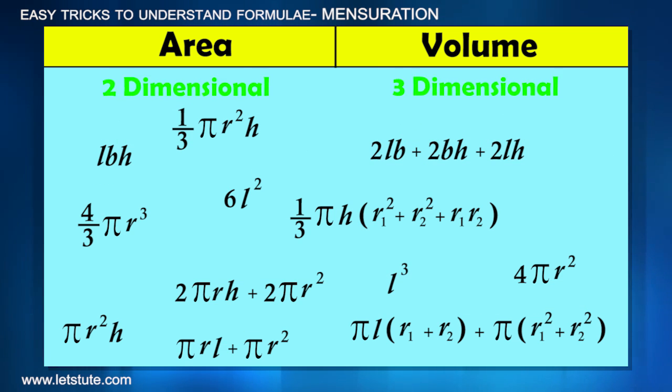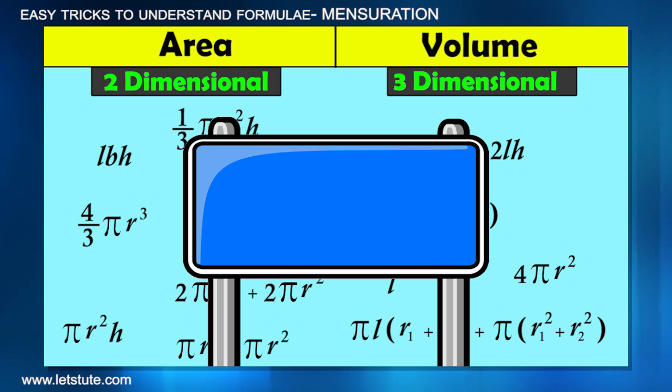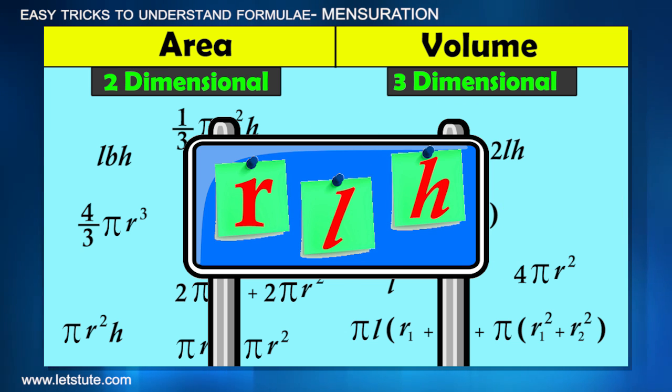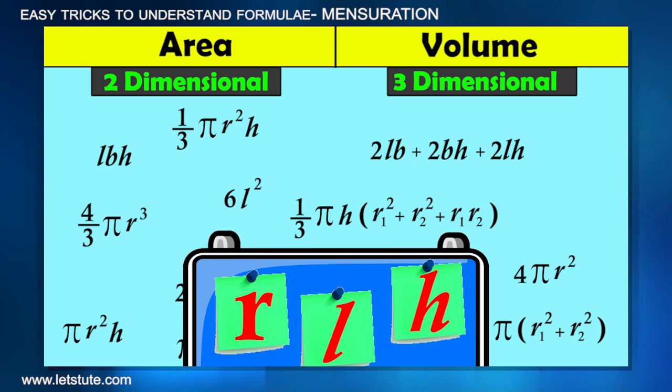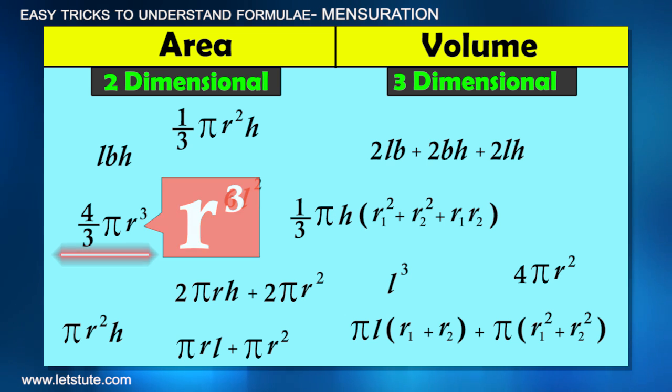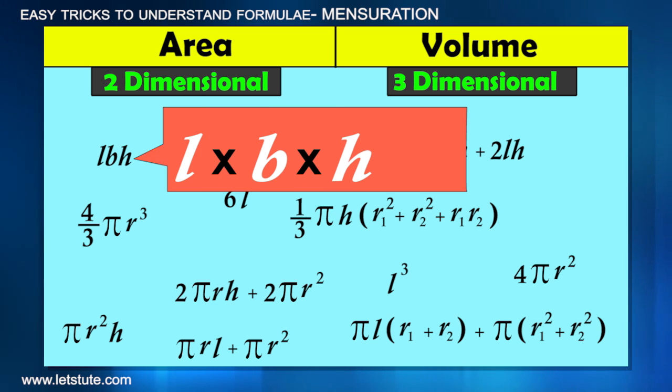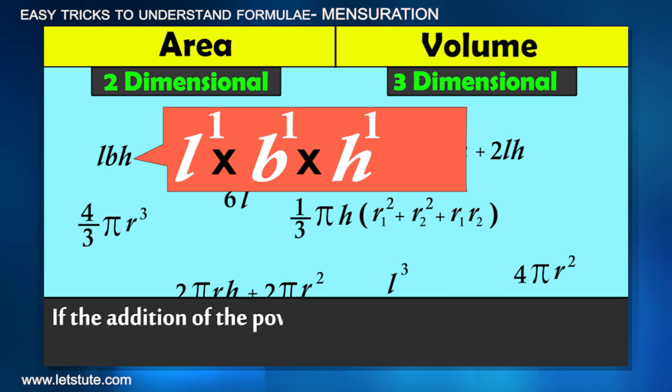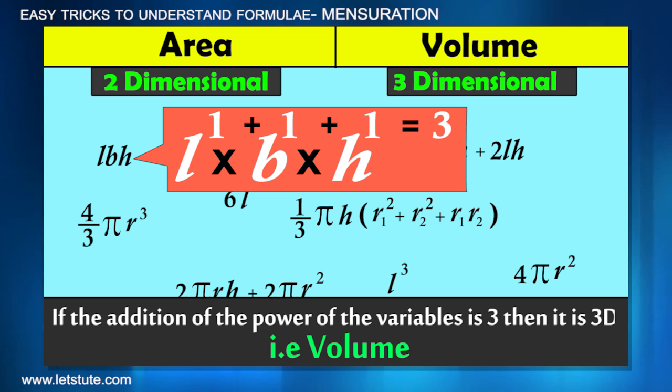As you can see here, all the formulae have variables: R, L, H, all the alphabets, they are basically variables. So the formula that has one variable with degree 3, like 4/3 π r³, or different variables with the powers when added gives 3, for example L, B, H, the power of L is 1, the power of B is 1, and the power of H is also 1, and when we add them up, it gives 3.